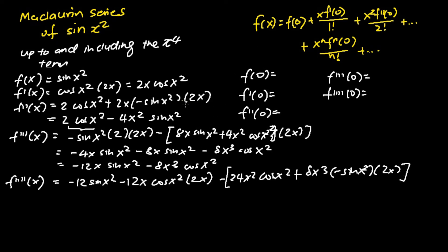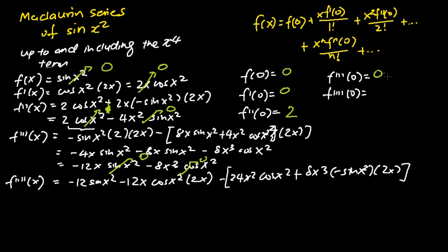Now I evaluate all derivatives at x equals 0. f(0) equals sine of 0 squared, which is 0. f'(0): substituting x equals 0 into 2x cosine x squared gives 0, since 2x equals 0. f''(0): the first term gives 2 because cosine 0 is 1, and the second term is 0, so f''(0) equals 2. f'''(0) is 0 because both terms are 0 when x equals 0. f''''(0) is also 0 because all terms are 0 when x equals 0.